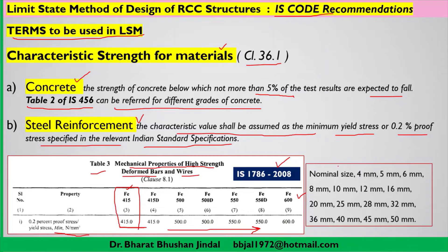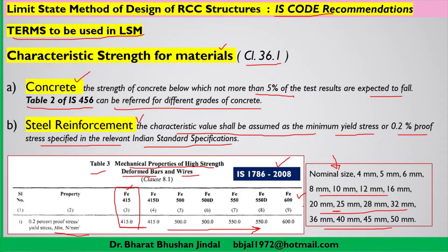Another important consideration is the nominal sizes of reinforcement bars available as per code. These diameters are 4 mm, 5 mm, 8 mm, 10 mm, 12 mm — earlier there was also a 22 mm dia bar, but it has been removed in the latest revision. These nominal diameter bars are manufactured as per codal guidelines, and while designing you can choose any diameter from these values based on requirement and application.